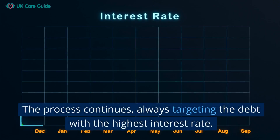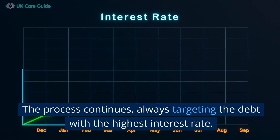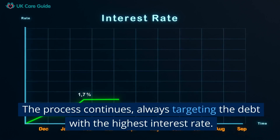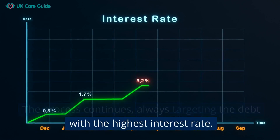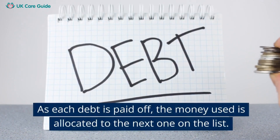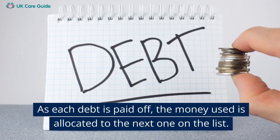The process continues, always targeting the debt with the highest interest rate. As each debt is paid off, the money used is allocated to the next one on the list.